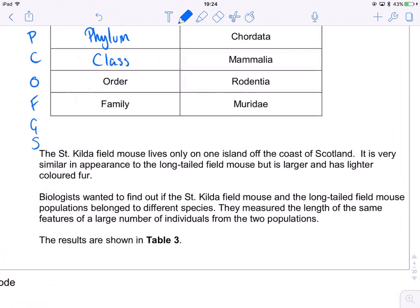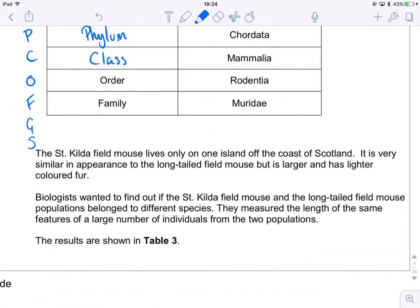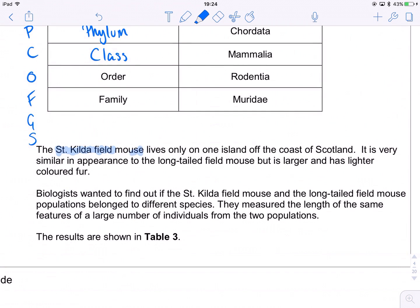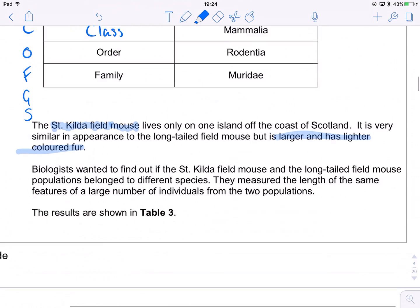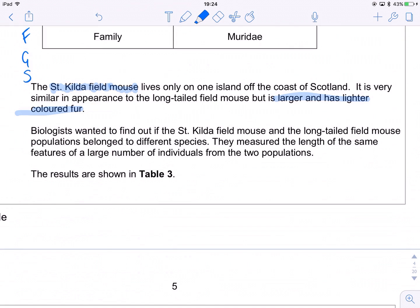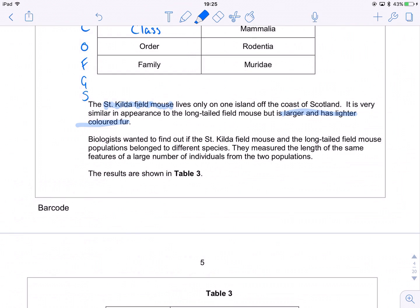Okay, next up, the St. Kilda field mouse. So we've got a different type of field mouse. It lives on only one island off the coast of Scotland. It's very similar in appearance to the long-tailed field mouse, but it is larger and has lighter coloured fur. So slightly different. Biologists wanted to find out if the two populations were related, and if they belonged to different species. They measured the length of the same features of a large number of individuals from the two populations, and we've got some results.